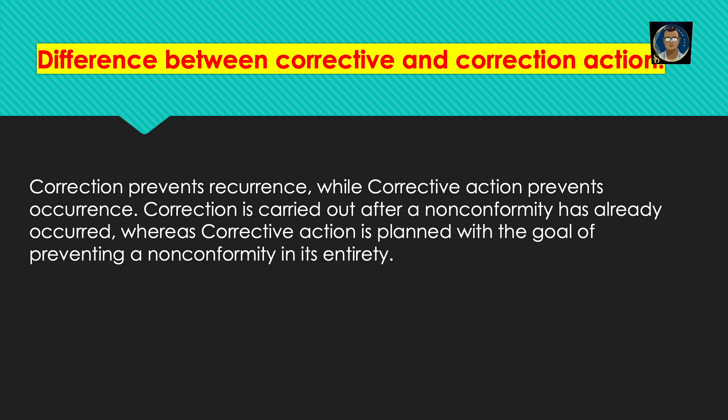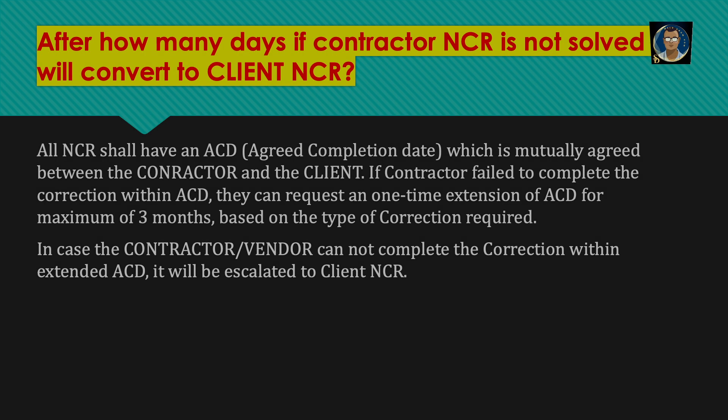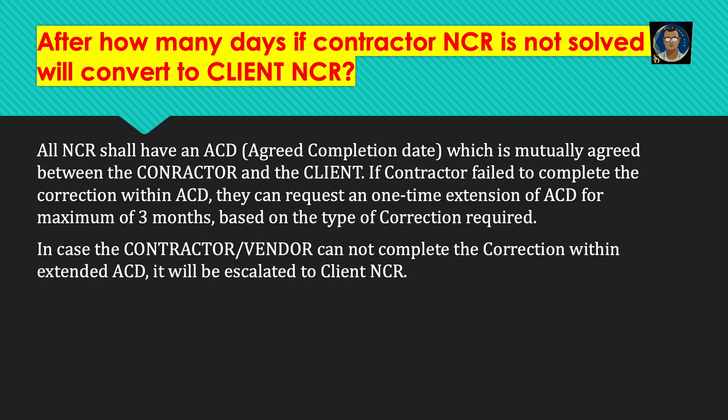Difference between corrective action and correction: correction prevents recurrence while corrective action prevents occurrence. Correction is carried out after a non-conformity has already occurred, whereas corrective action is planned with the goal of preventing non-conformity in its entirety.